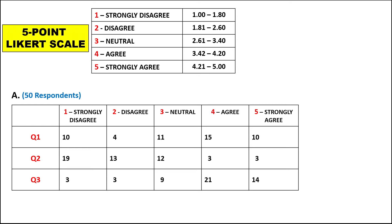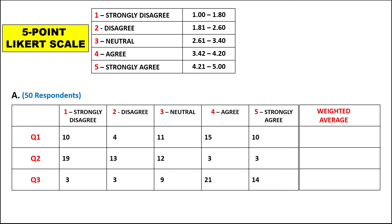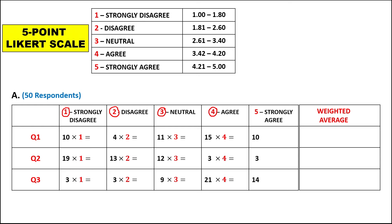First, we need to compute the weighted average or the weighted mean from this data. We need to multiply each response by its weight. For strongly disagree, the weight is 1, so times 1. For disagree, the weight is 2, so times 2. For neutral, times 3. For agree, times 4. And for strongly agree, times 5.